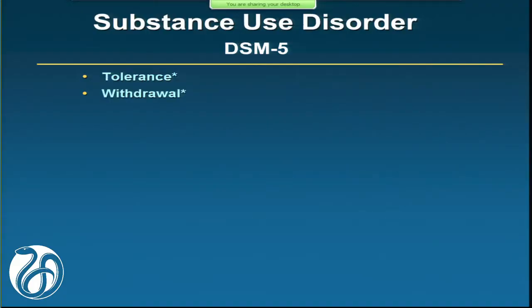Here are the symptoms, and tolerance and withdrawal are the first two — they have an asterisk. The asterisk means it depends on whether the medication is prescribed by a physician, because it turns out that tolerance and withdrawal are normal. It happens to every one of us when we take all sorts of different drugs, particularly sedative drugs. Tolerance and dependence can be associated with withdrawal, but that's not addiction.